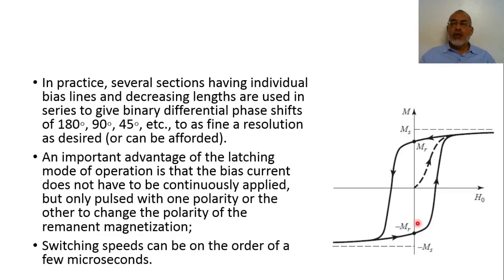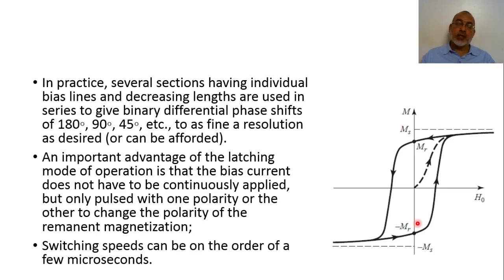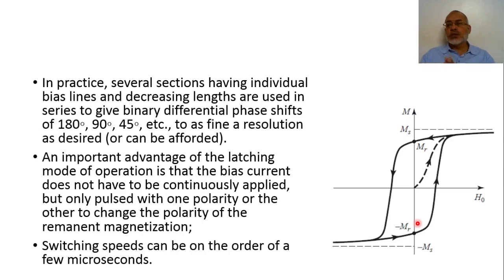In a mechanical scanning array, the scan time depends on the mechanical parts. In an electronically scanned phased array, it depends on the switching speed of the phase shifters, which is on the order of a few microseconds. This is a great advantage of the phased array based on phase shifters. Semiconductor phase shifters may have switching speeds on the order of nanoseconds, which is much better than ferrite phase shifters. However, the power handling of ferrite phase shifters is much higher than that of semiconductor phase shifters based on diodes such as PIN diodes or varactor diodes. Semiconductor phase shifters will be discussed in a later chapter.